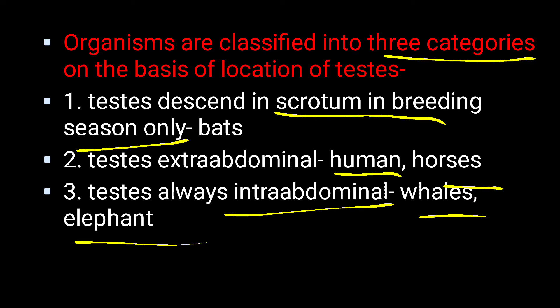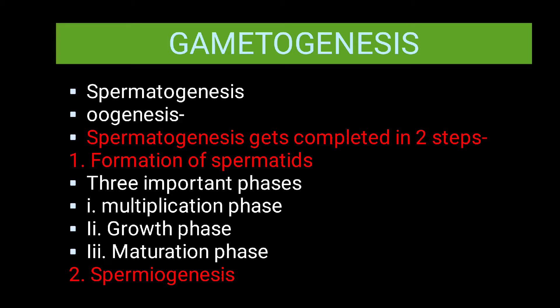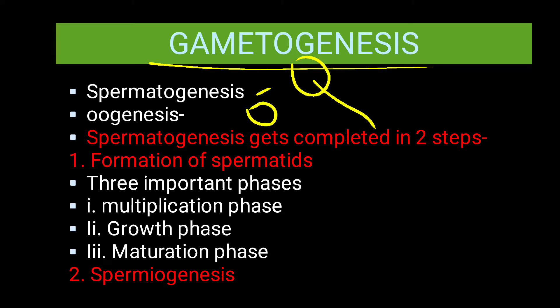So today's topic is spermatogenesis. First, you all should know about gametogenesis. Wherever you find the word 'genesis,' it means something is originating or there is a formation of something. In gametogenesis, there is formation of gametes — the sex cells. The male gamete is sperm and the female gamete is the ovum. So the formation of sperm is called spermatogenesis, and oogenesis is the formation of ova, which I will cover in the next part.